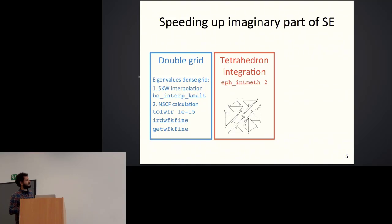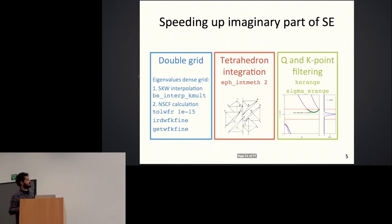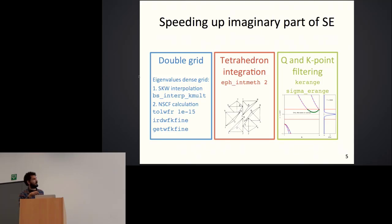The Q point filtering relies on correctly describing the delta functions. If we use a smearing technique like Gaussian or Lorentzian instead of the tetrahedron integration, the filtering will not be very effective. The tetrahedron method divides the Brillouin zone into tetrahedra. For integrals over the Brillouin zone involving delta functions, we keep track of which K points are at each edge of the tetrahedra and use simple analytical expressions, with the matrix elements already computed.